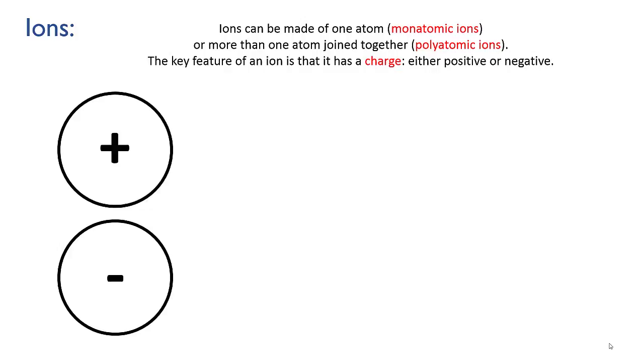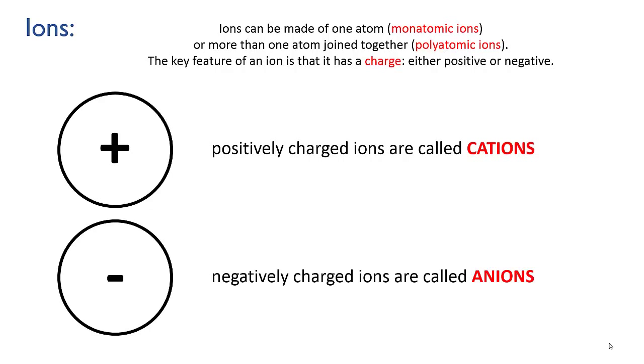And as you know the key feature of an ion is that it has a charge. It can be either positive or negative. If the ion has a positive charge then we call it a cation. And if it has a negative charge we call it an anion.